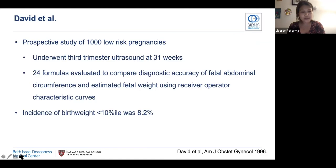The quick answer is that abdominal circumference less than the 10th percentile alone has comparable sensitivity and specificity to EFW less than the 10th percentile. As a reminder, sensitivity is the true positive rate — the ability of a test to correctly identify those with the condition. Specificity is the true negative rate — the ability of a test to correctly identify those without the condition. This was one of the early landmark studies from AJOG to examine the diagnostic accuracy of abdominal circumference. David et al. studied a thousand low-risk pregnancies who underwent a third-trimester ultrasound at 31 weeks, using ROC curves to compare fetal abdominal circumference with EFW calculated through 24 different nomograms.